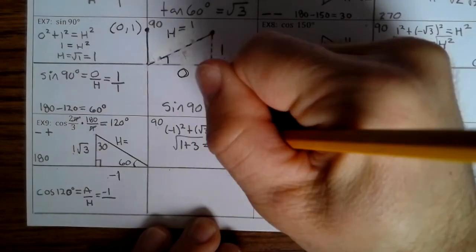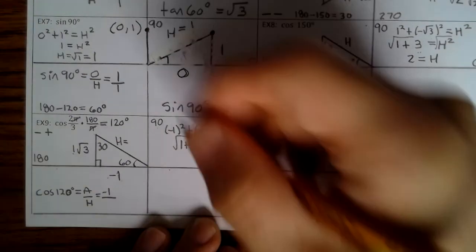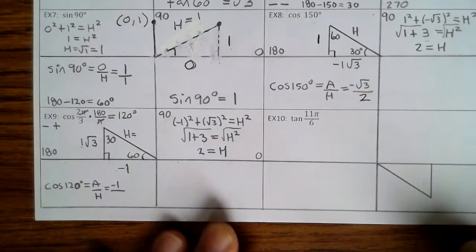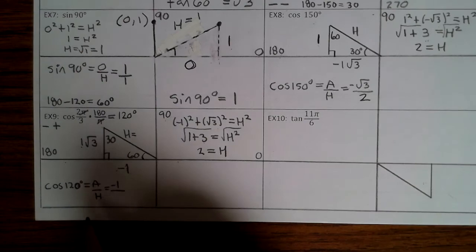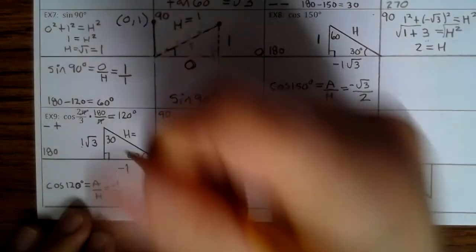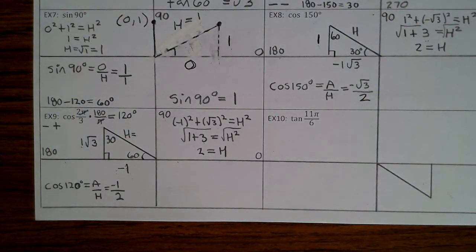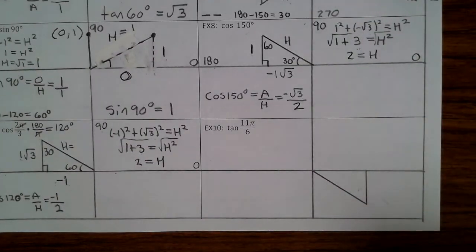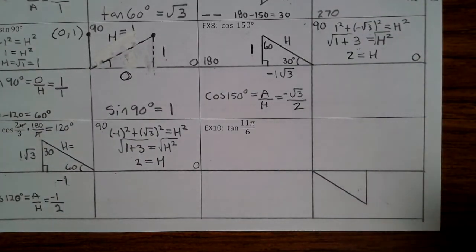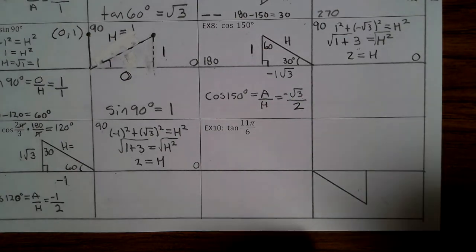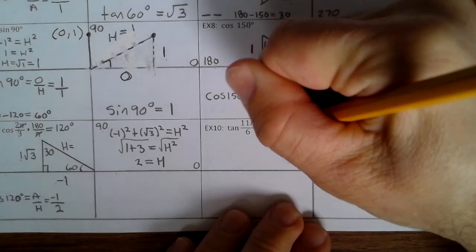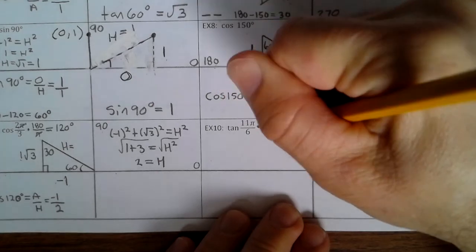Last example, example 10: tangent of 11π/6. We need to convert to degrees by multiplying by 180 divided by π. The pi's divide out, giving 11 times 180 divided by 6. Using a calculator: 11 times 180 divided by 6 is 330 degrees.